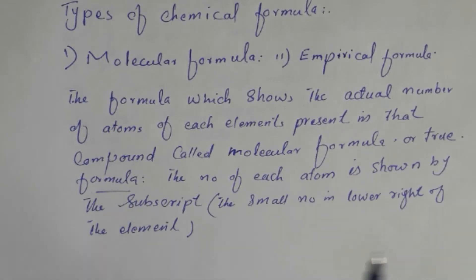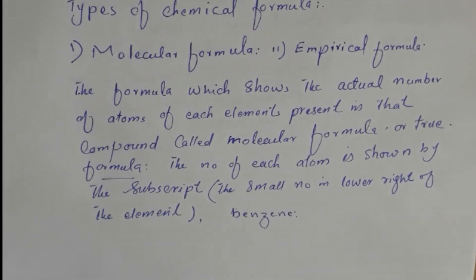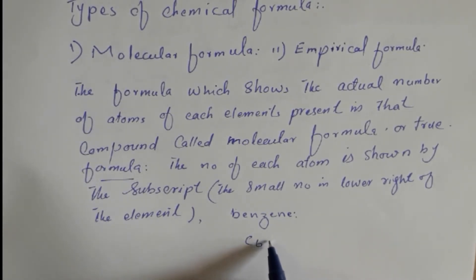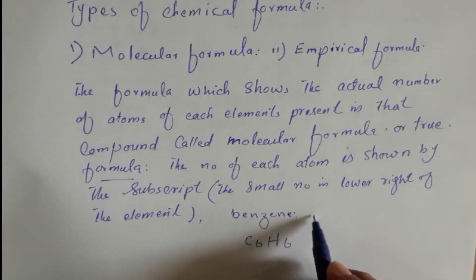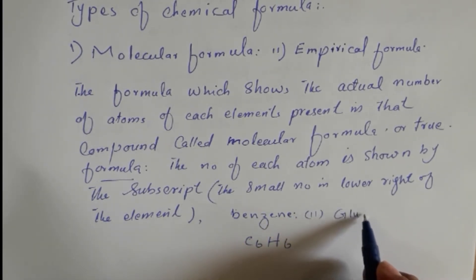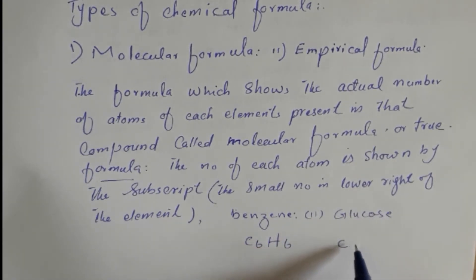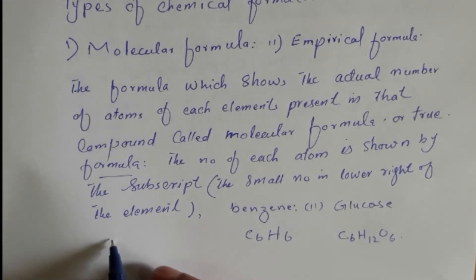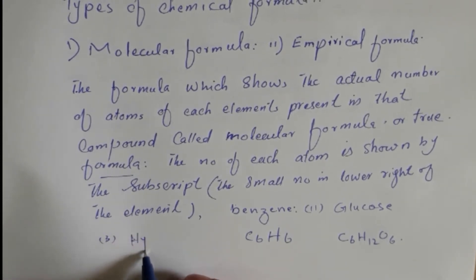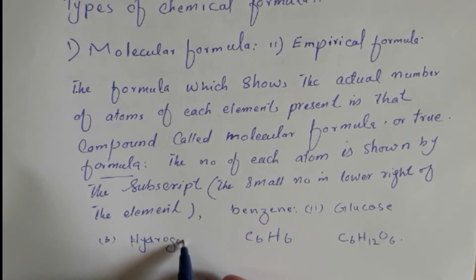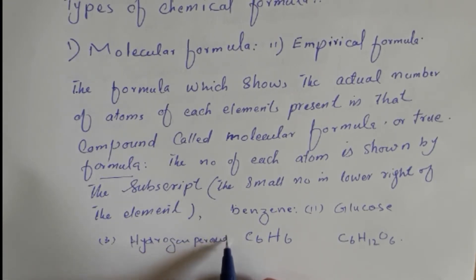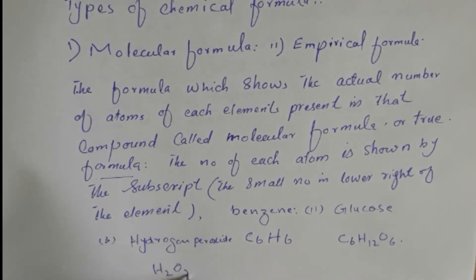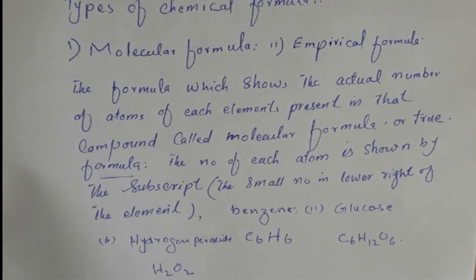For example, benzene is C₆H₆. Another example is glucose: C₆H₁₂O₆. A third example is hydrogen peroxide: H₂O₂. These are examples of molecular formulas.